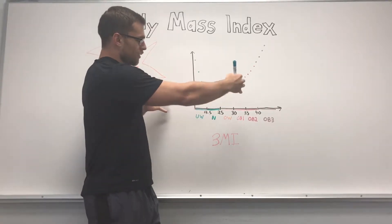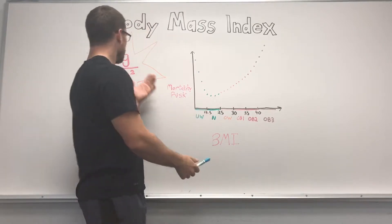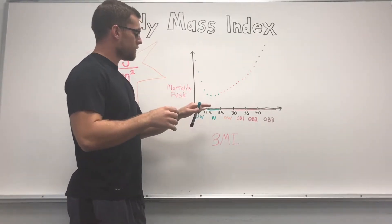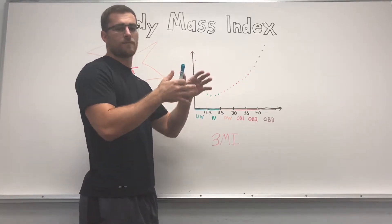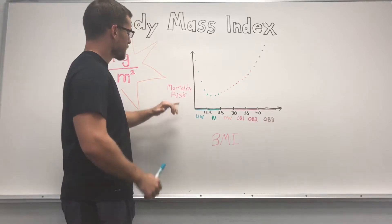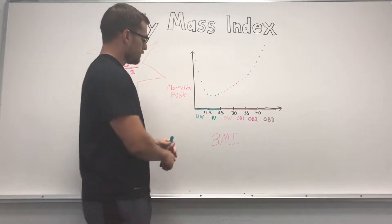BMI is split into categories based on kilograms over meters squared. Based on your BMI, that will tell you what type of risks you have as far as mortality and other cardiovascular disease.